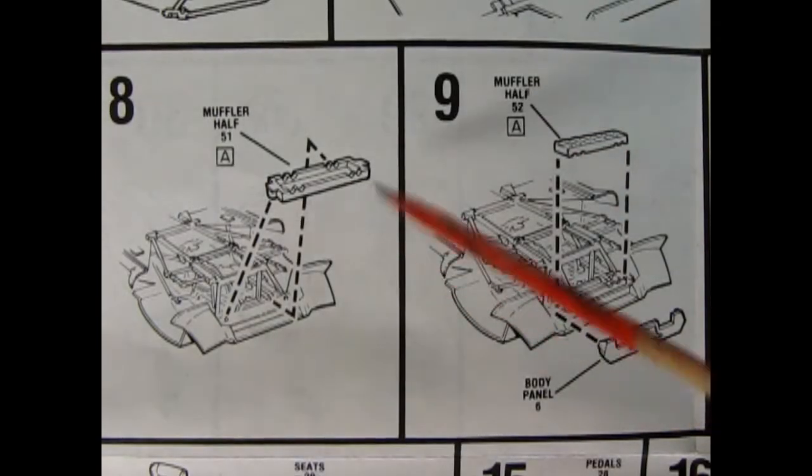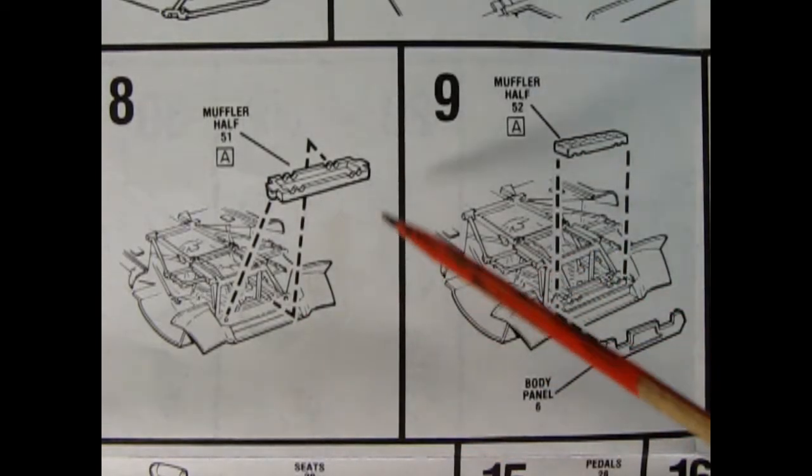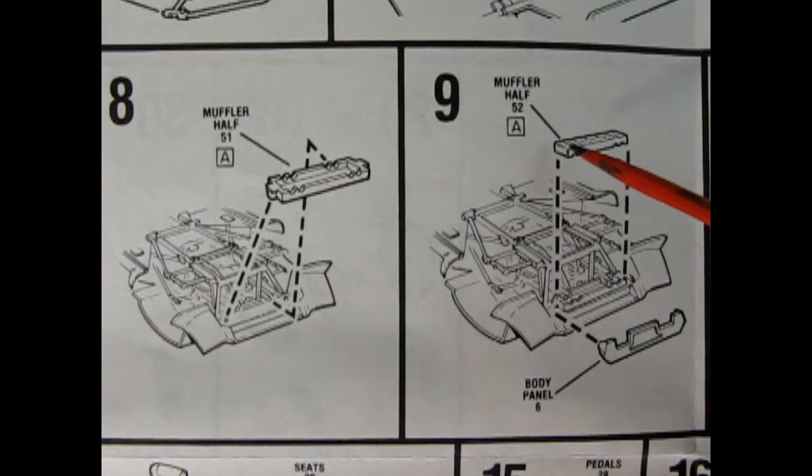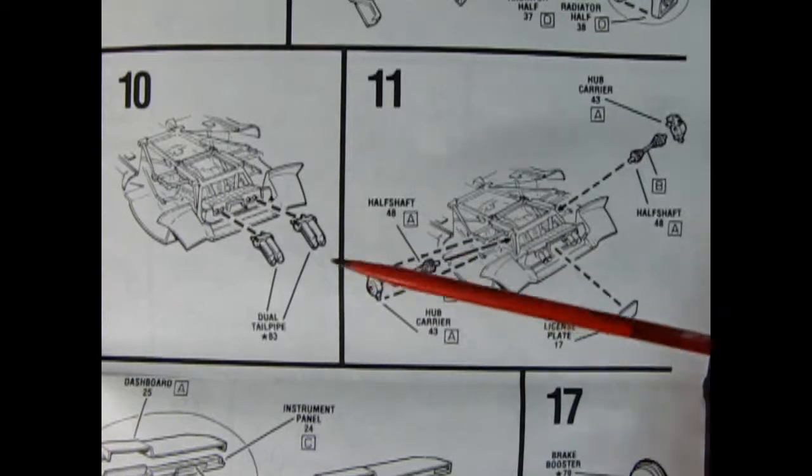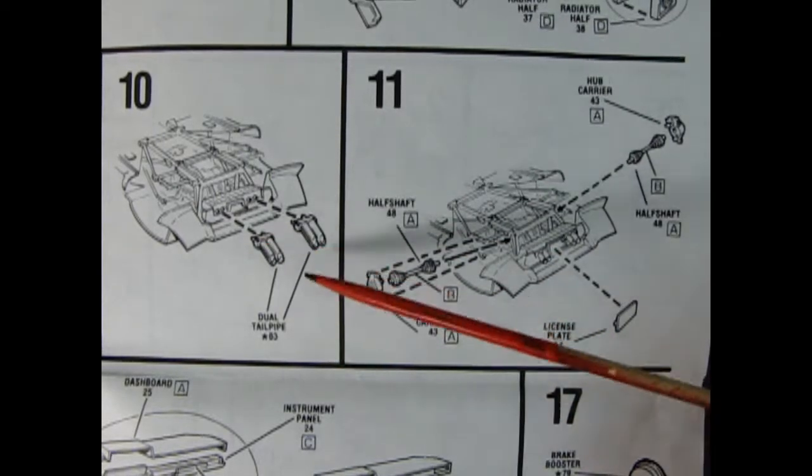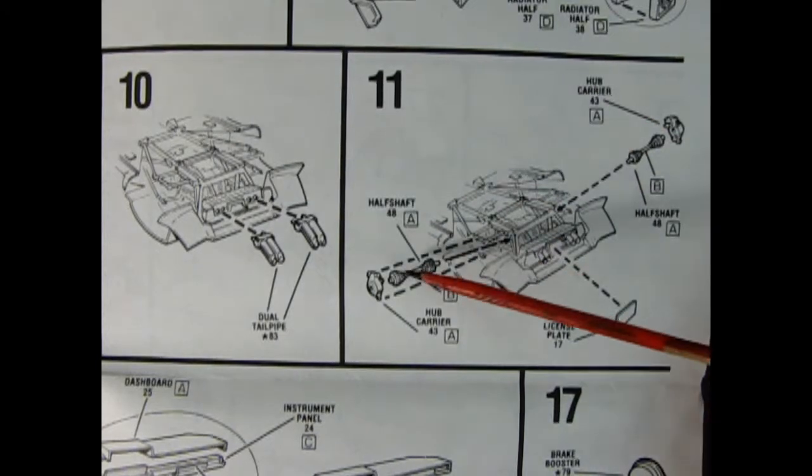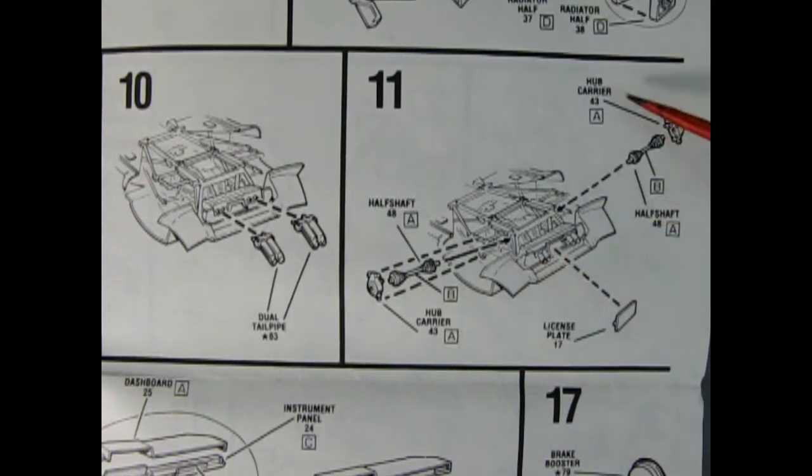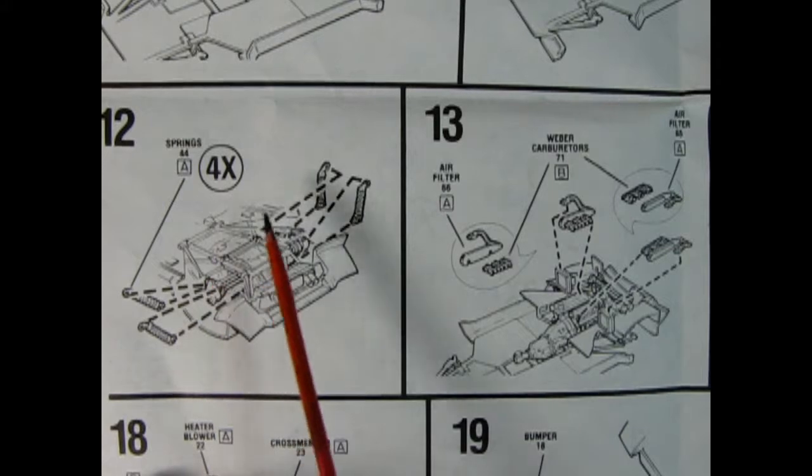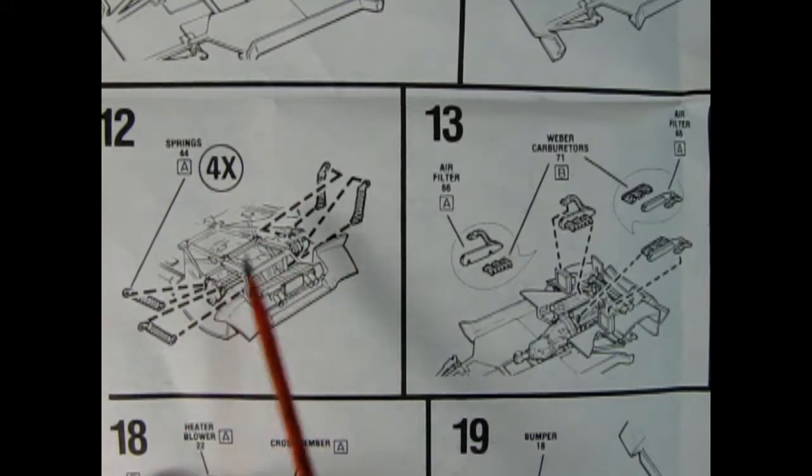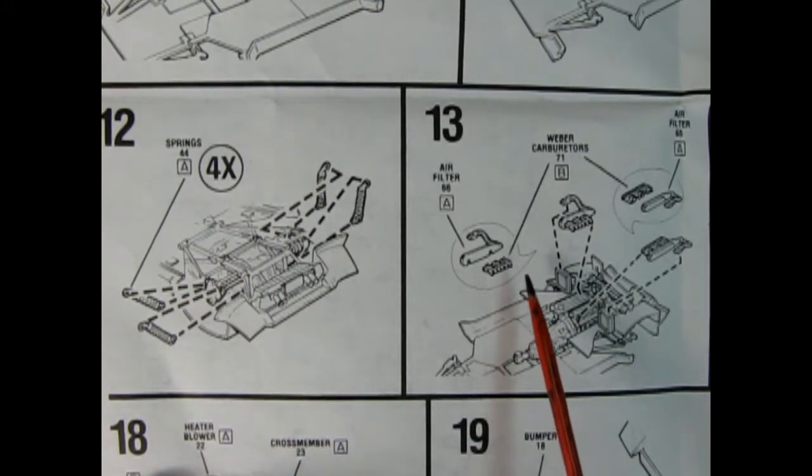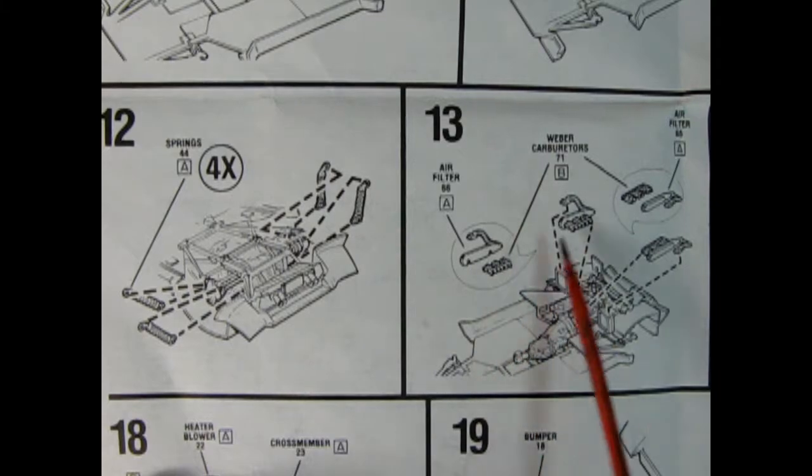Panel six shows our crossover pipes going in place, and then in panel seven we drop in the big Ferrari motor. Panels eight and nine show our muffler being glued together. Panel 10 shows the dual tailpipes going in place, these are chrome. Then we've got the half shaft and the hub carrier for our rear suspension. Here we've got our rear springs going on, and we got our Weber carbs going up onto the top of the engine and our air filter.